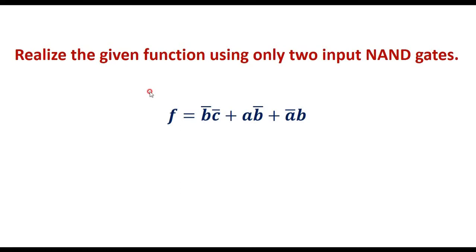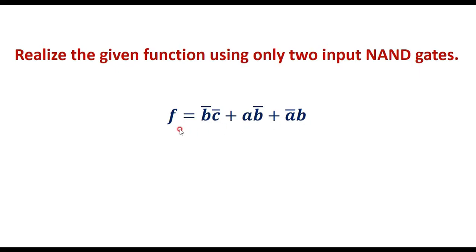In this video, let me take one example on realization of a given boolean function. Realize the given function using only two-input NAND gates. Here the function f is given which is equal to b̄c̄ + ab̄ + āb. We are supposed to implement this using only two-input NAND gates.